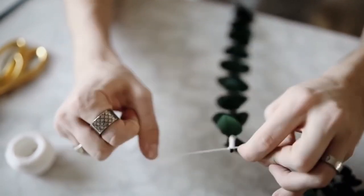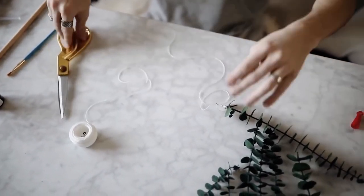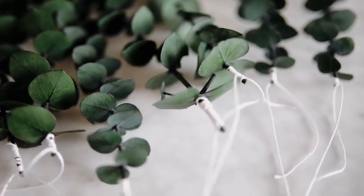Just go ahead and tie these off onto all of your pieces of eucalyptus that you want to add. I believe I did an odd number of about seven pieces.